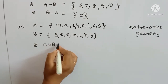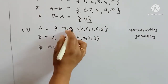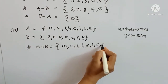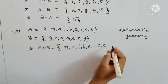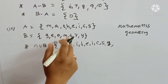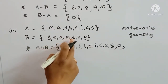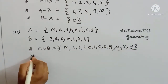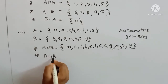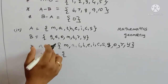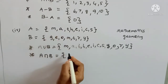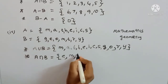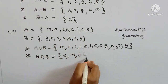A union B combines all letters from both words. A intersection B gives the common letters: e, m, t — letters present in both 'mathematics' and 'geometry'.